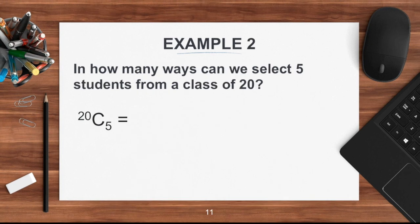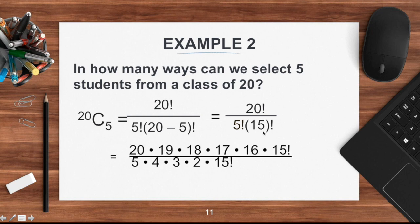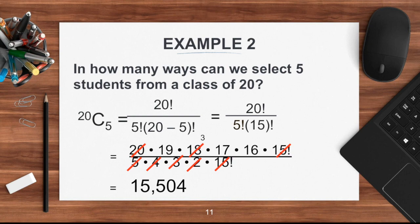Example two: In how many ways can we select five students from a class of 20? n is 20 and r is five. Combination of 20 taken five: 20 factorial divided by five factorial times 15 factorial. Expanding and cancelling common factors — four and five cancel with 20, three and two cancel with 16, remaining factor is six — gives us 15,504 ways.